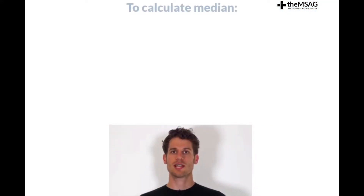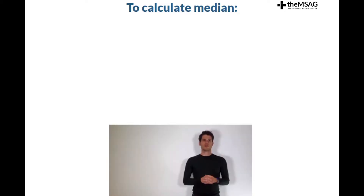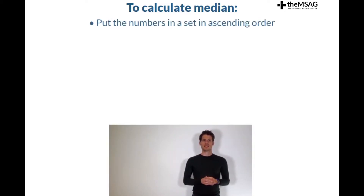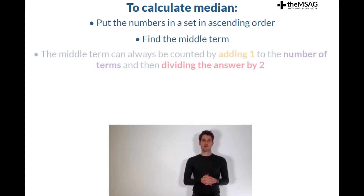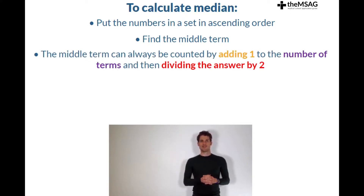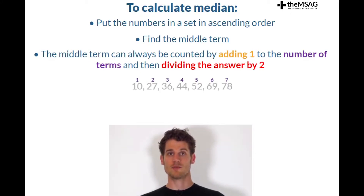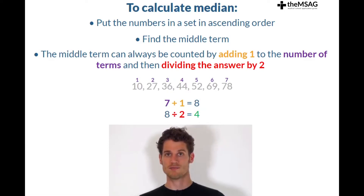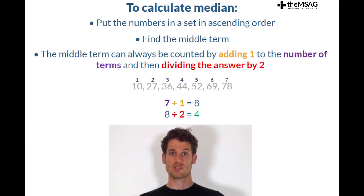Next, to calculate a median, things get a little more interesting. You must first put the numbers in a set in ascending order from smallest to biggest and then find the middle term. The middle term can always be found by adding 1 to the number of terms and then dividing the answer by 2. For example, in a list of seven terms the middle term will be 7 plus 1, which equals 8, then 8 divided by 2 equals 4 — the fourth term.